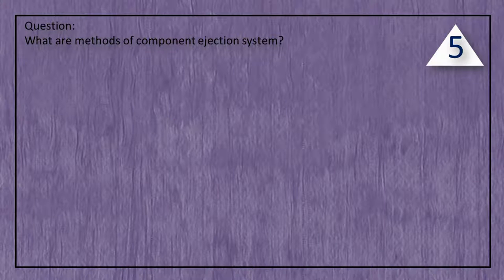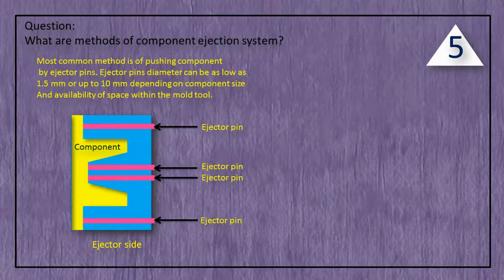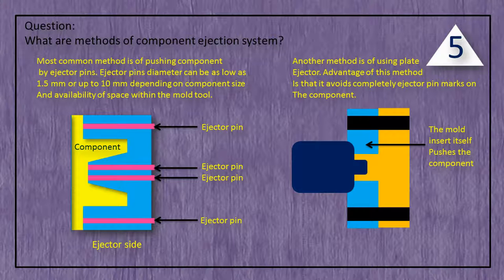Question: What are the methods of component ejection system? Answer: The most common method is pushing the component by ejector pins. Ejector pin diameter can be as low as 1.5mm or up to 10mm, depending on component size and availability of space within the mold tool. Another method is using a plate ejector. The advantage of this method is that it avoids ejector pin marks on the component completely.